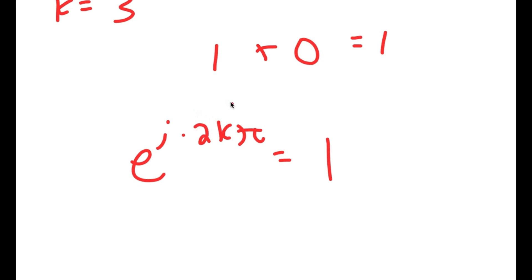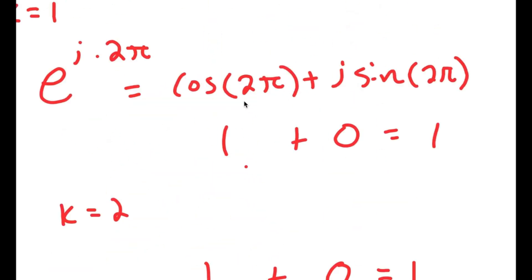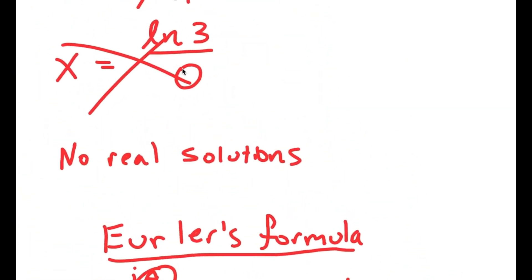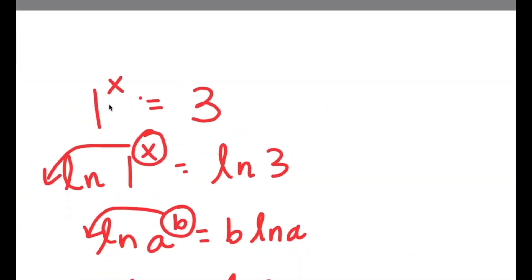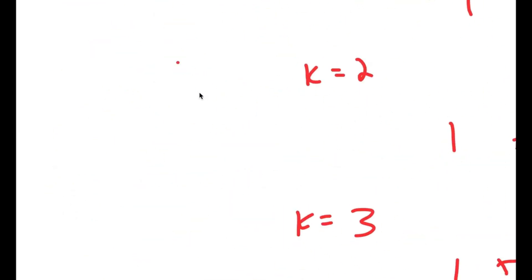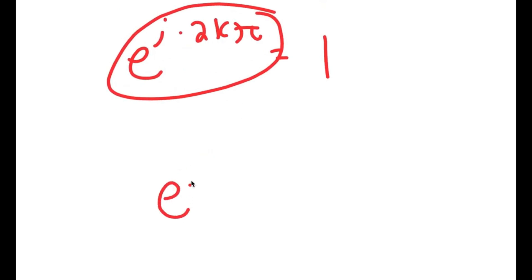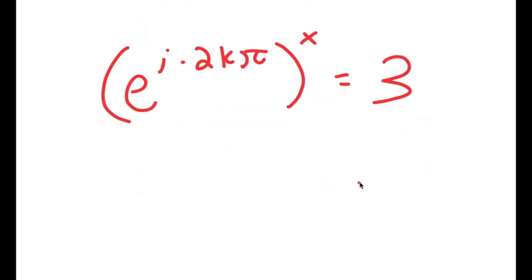So now this means that we can substitute this back into our original equation, which is 1 to the power of x is equal to 3. We can substitute 1 for e to the power of i times 2k pi. So now I get e to the power of i times 2k pi, to the power of x, is equal to 3. And this is my new equation.